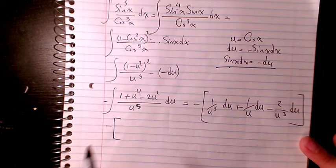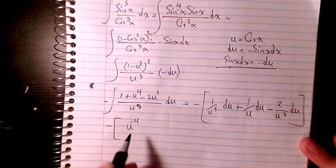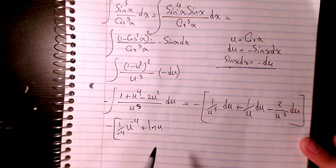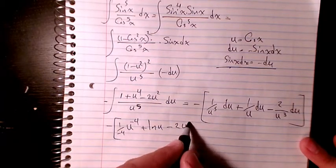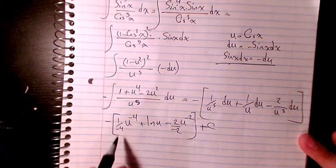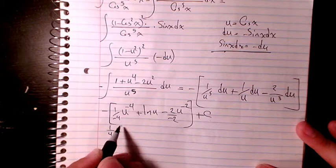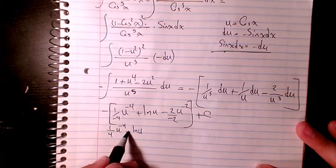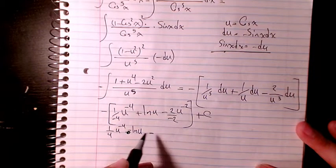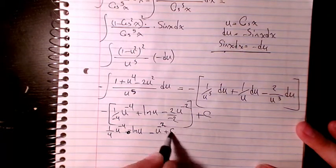Integrating each term: the integral of u to the power of negative 4 divided by negative 4 gives negative 1 over 4 u to the power of negative 4. Applying the negative sign out front gives positive 1 over 4u⁴. Then plus ln u, so it becomes minus ln u. The last term gives negative 2 divided by 2 times u to the power of negative 2, which simplifies to plus 1 over u squared, plus C.